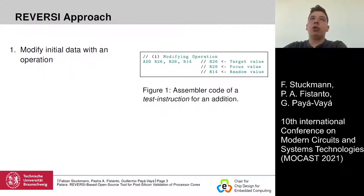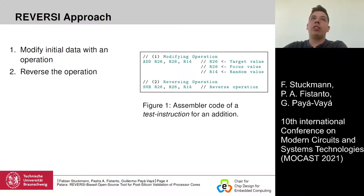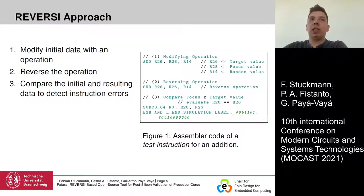I want to introduce the reversi approach step by step. The first step consists of modifying initial data with an operation — in this example, an addition. In the next step, the operation is reversed; here, this is done by a subtraction. In the final step, the initial and resulting data are compared to detect errors. If either the modifying or reversing operation is faulty, the comparison will fail and an error is detected.